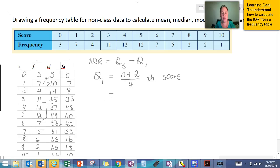That's going to tell us the placement of the score, just like in median. So we have 66 values plus 2 over 4.